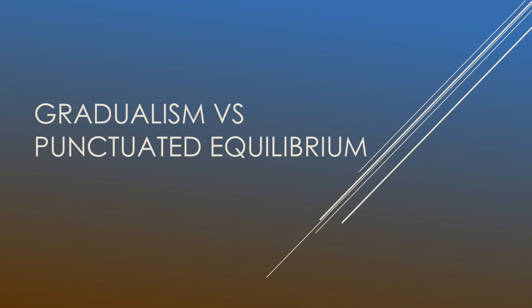Hi, today we're going to go through gradualism versus punctuated equilibrium. These are two very different forms of evolution that can occur within a species. Let's get started.